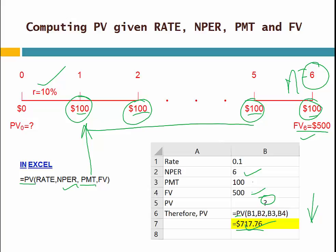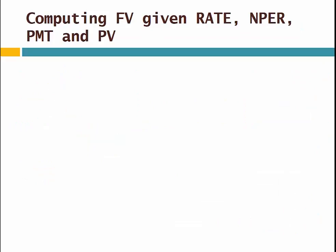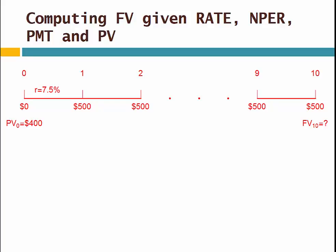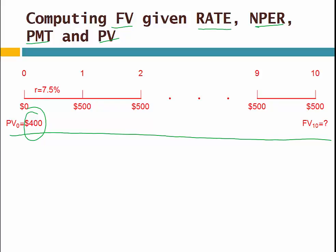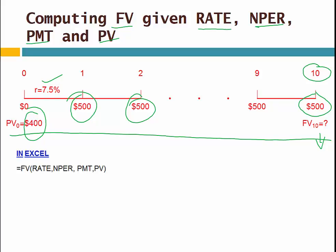Now let's look at another example. In this example, we have to calculate future value given rate, number of period, payment, and present value. Suppose you deposit $400 to your saving account at the end of the current period and you keep depositing $500 for the next 10 years, and the bank is giving you 7.5% interest rate. How much will that be at the end of year 10? Excel has a future value function with arguments: rate, number of period, payment, and present value.